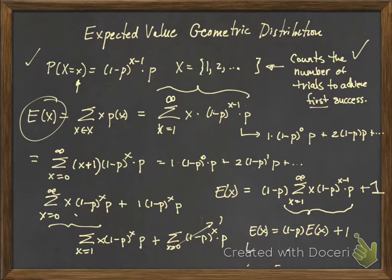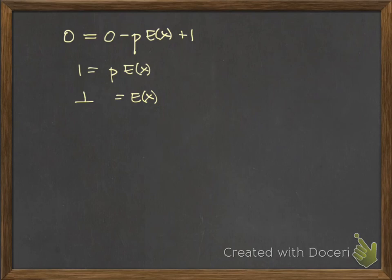And then if we distribute, collect terms, we have E of X equals E of X minus P times E of X plus 1. So those E of X's cancel. Let's move over here. What do we have? We had 0 equals minus P times E of X plus 1, or 1 is equal to P E of X, or E of X is equal to 1 over P.